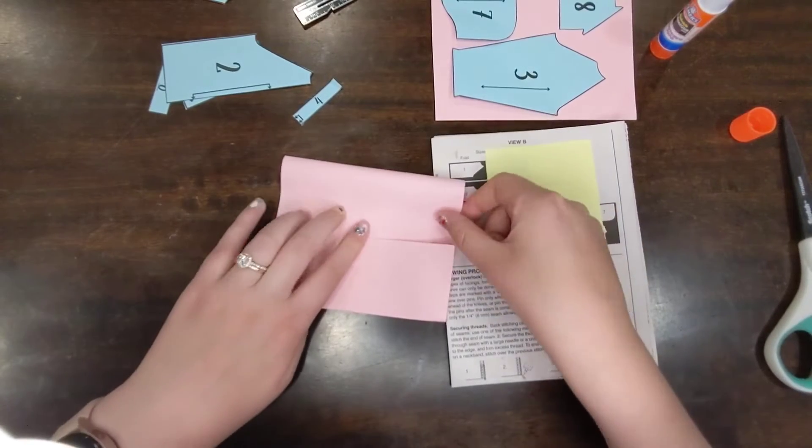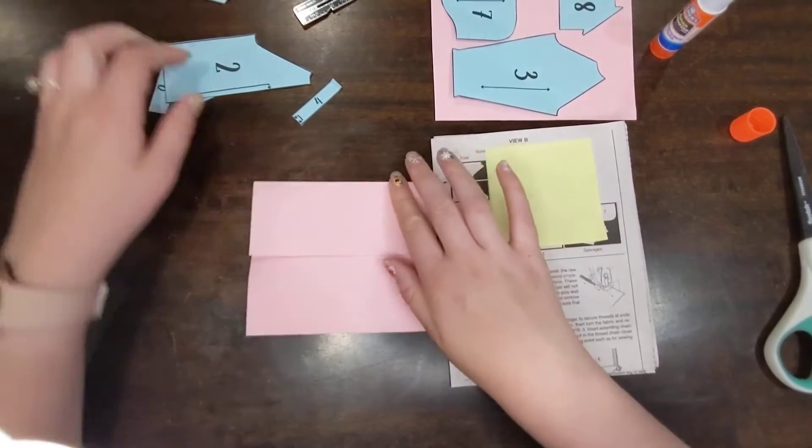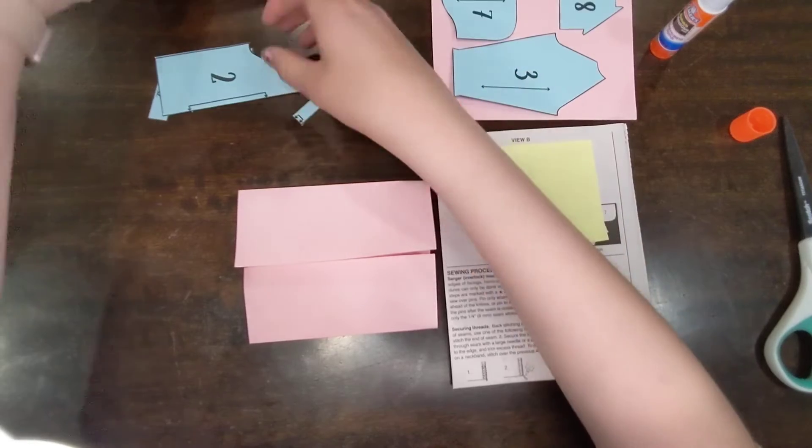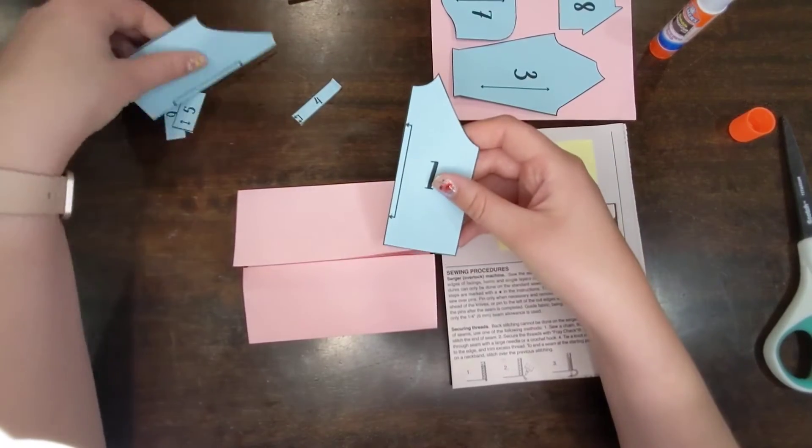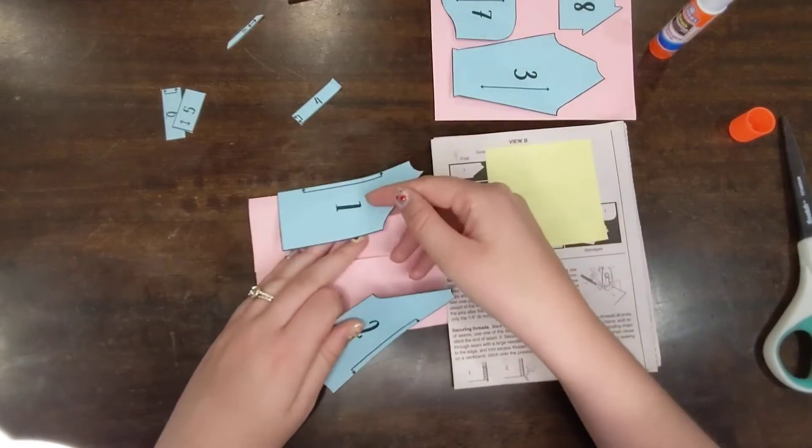You might be wondering, why do I have to do this? Well, the answer is we're doing pieces one and two here. And you'll notice that both piece one and two need to be placed on the fold. If we only had one fold, we would not have space for piece one and two.